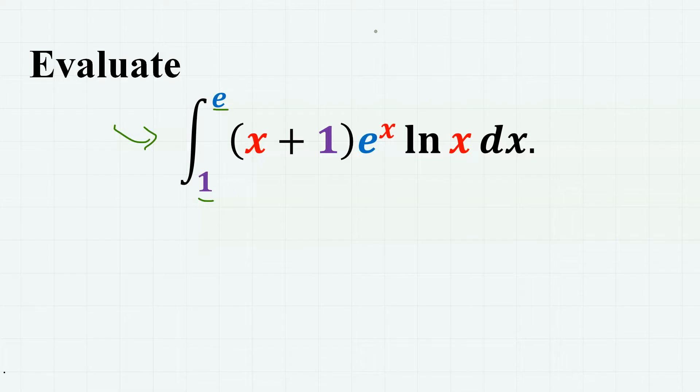Let's solve this problem. Because this integrand consists of multiple kinds of functions, we have to use integration by parts, where the integral of uv' is equal to uv minus the integral of u'v.